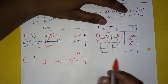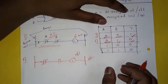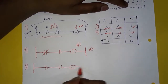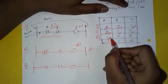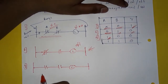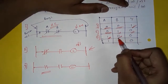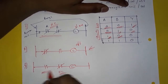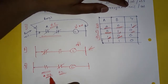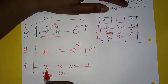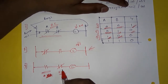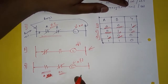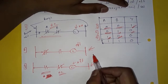In the third condition, A is energized so its contacts get open. B is de-energized so its contacts remain in normally closed position. Because A is energized it is open, and B is not energized so it remains closed. So the lamp will remain off. The reason is the same as the second condition.